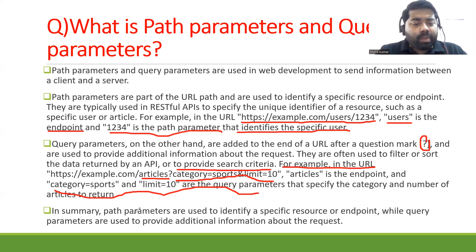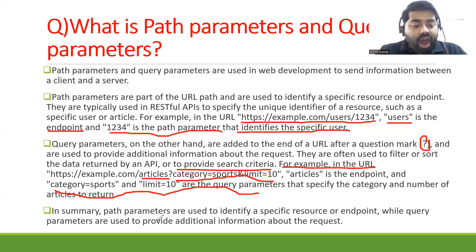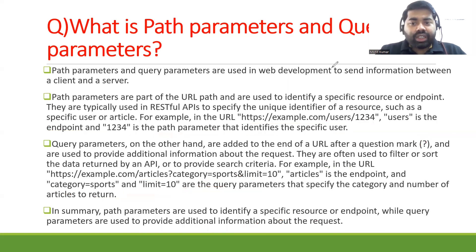In summary, path parameters are used to identify or specify a specific resource or endpoint, while query parameters are used to provide additional information about the request. That's the theory we have discussed.